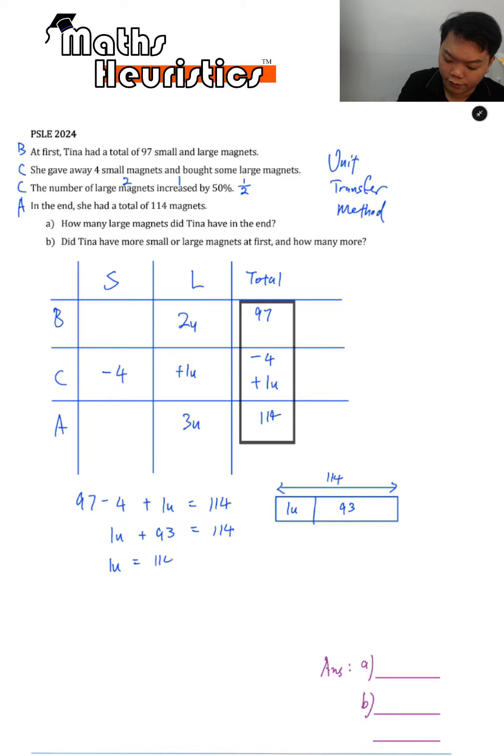Okay, one unit must simply be 114 minus 93 to give you 21.